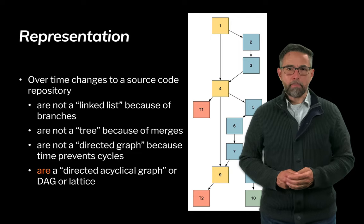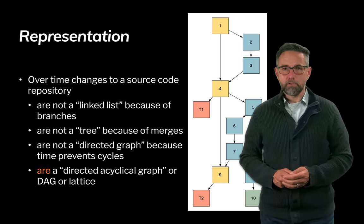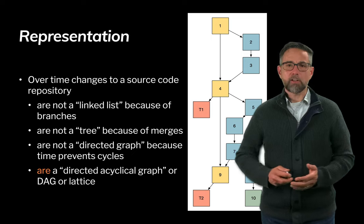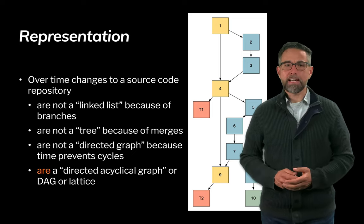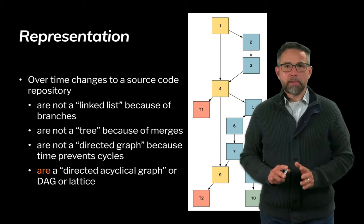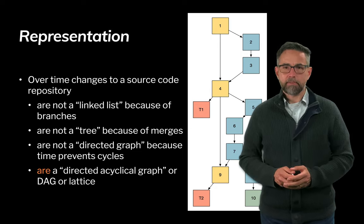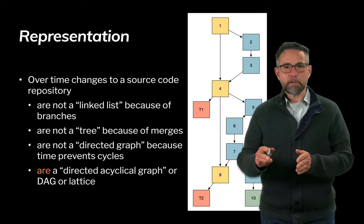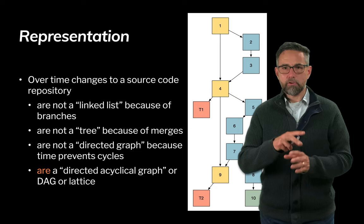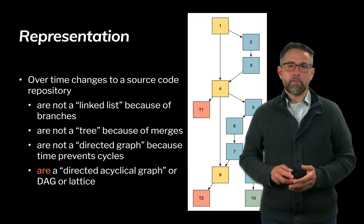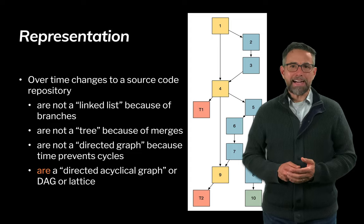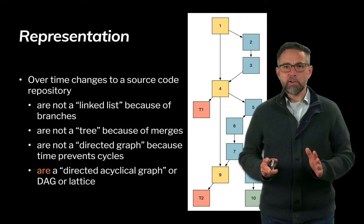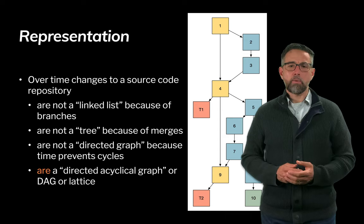For those with a computer science background: the representation of files moving through the system is not a linked list, because we can branch. It's not a tree, because trees don't allow merges back together. It's not simply a directed graph, because time prevents cycles. Instead, the representation used for software change management is called a directed acyclical graph — a DAG — or sometimes a lattice.